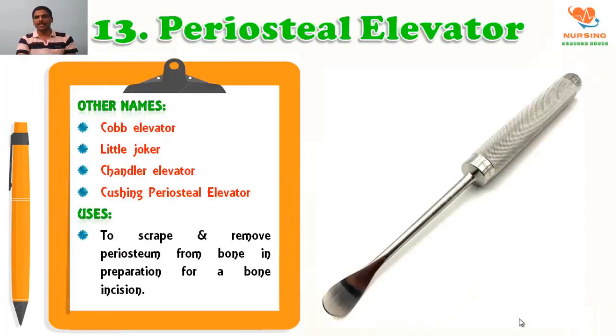Periosteal elevator — other names are Coop elevator, Little Joker, Chandlin elevator, or Cushion periosteal elevator — used to scrape and to remove the periosteum from the bone in preparation for bone incision.